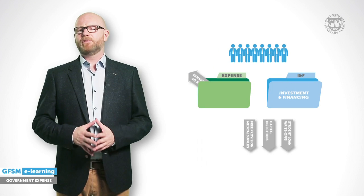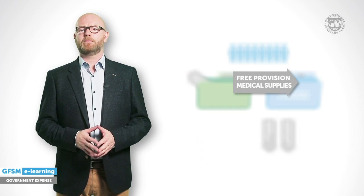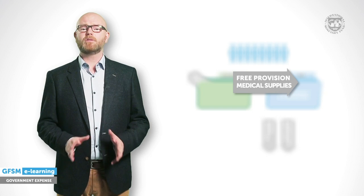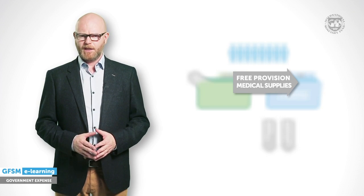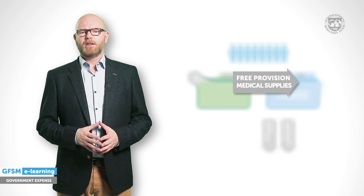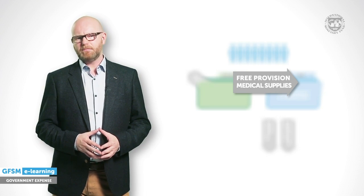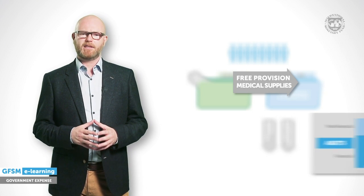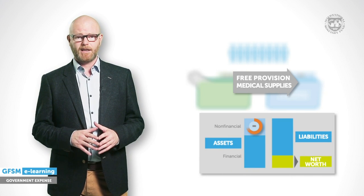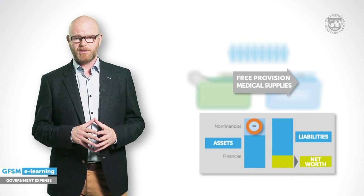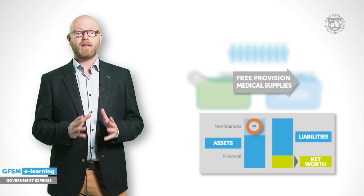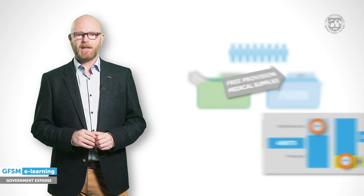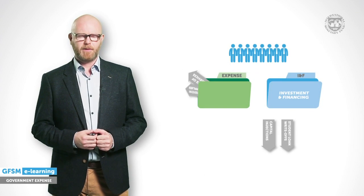The free provision of medical supplies causes some debate because some budget staff do not see a related cash outflow. Indeed, there was no money involved in this transaction, but the GFSM definition settles the debate because the inventory declines and this causes the assets and therefore net worth to decrease. Thus, an expense needs to be reported.